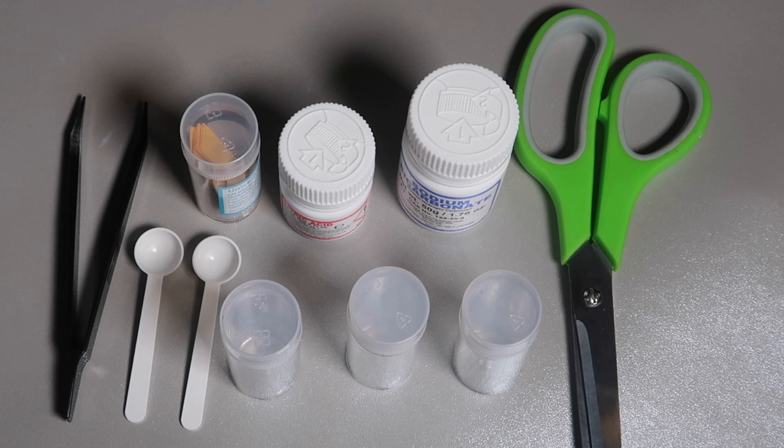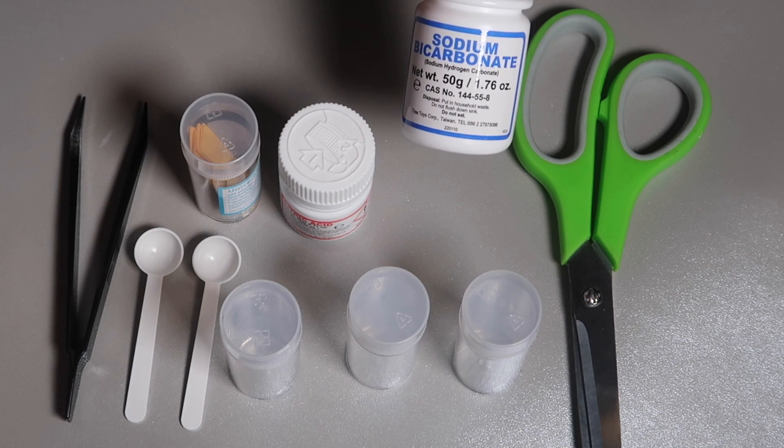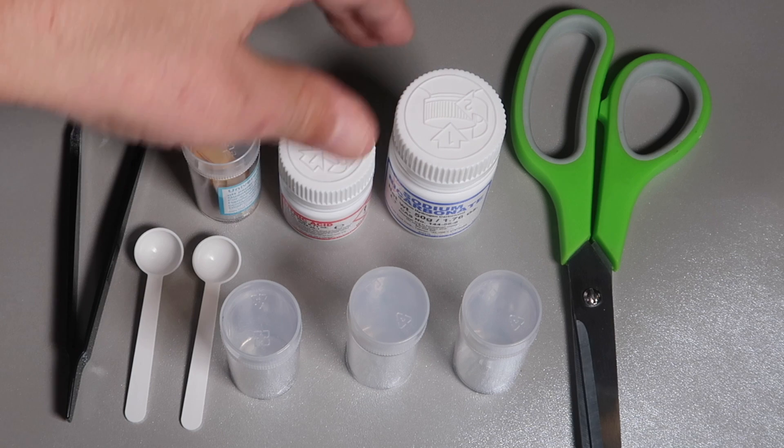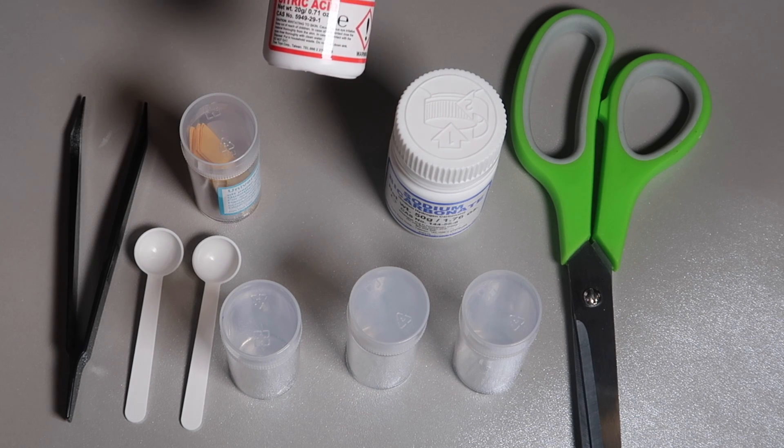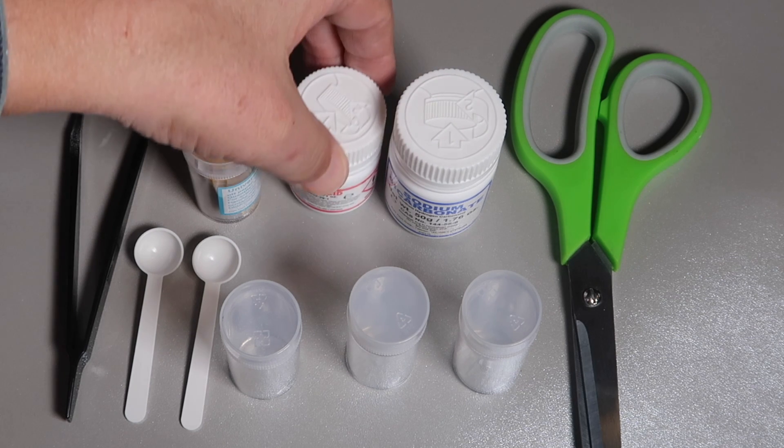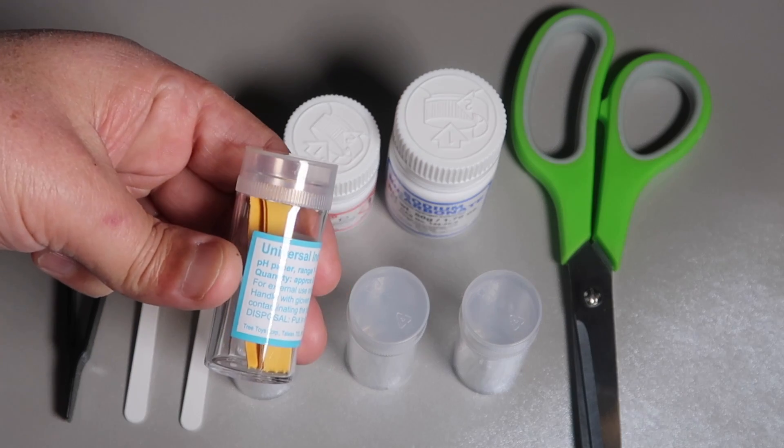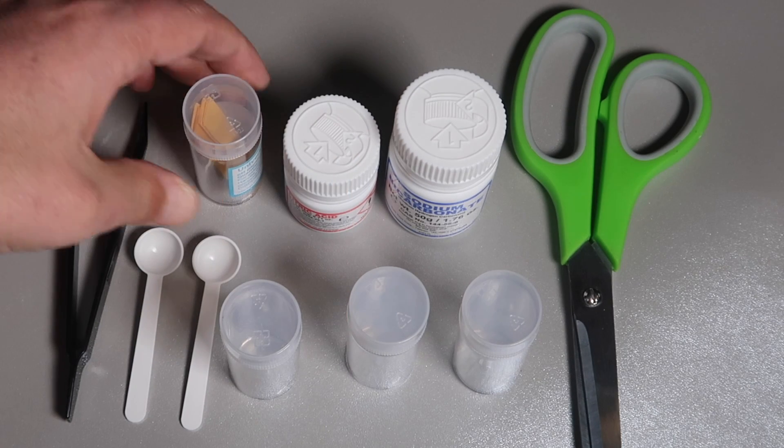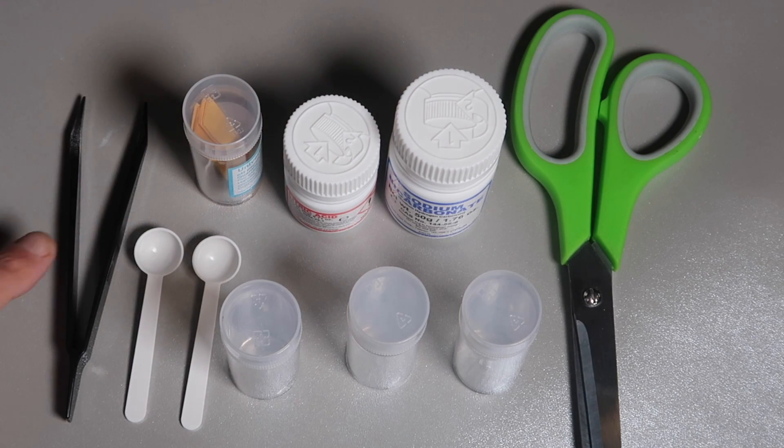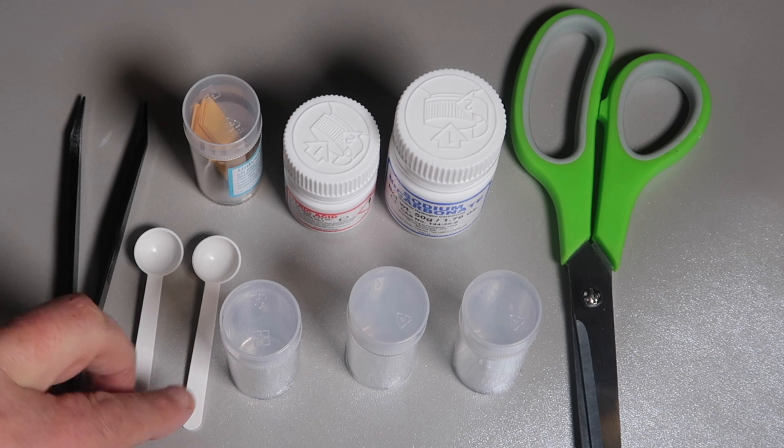We're going to attempt to find the poison at the crime scene, which in this activity is simulated by acidic or alkaline solutions. So for this, we need sodium bicarbonate, citric acid, that's our acidic and alkaline solutions. We're going to need indicator strips, a pair of scissors, tweezers, two little spoons, and three test tubes.